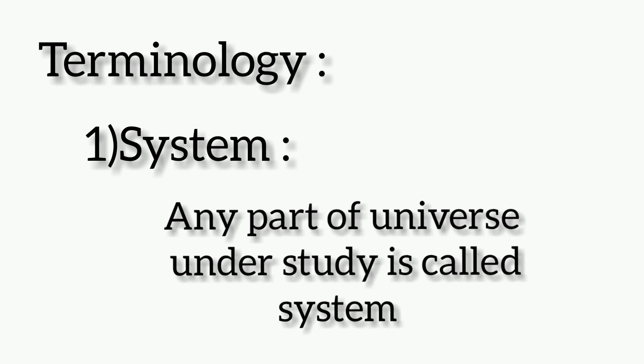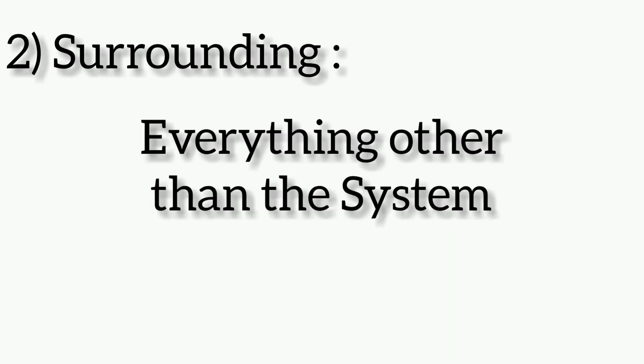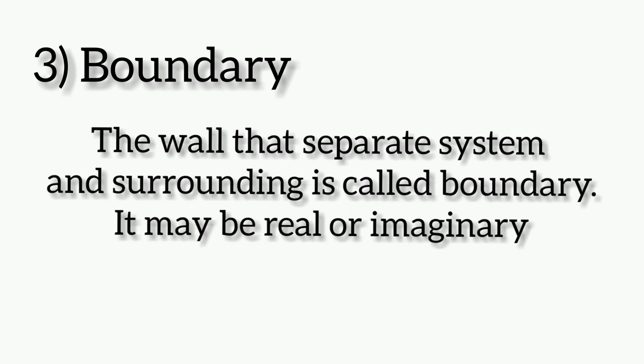Terminology. System: any part of the universe under study is called a system. Surroundings: everything other than the system is called surroundings.